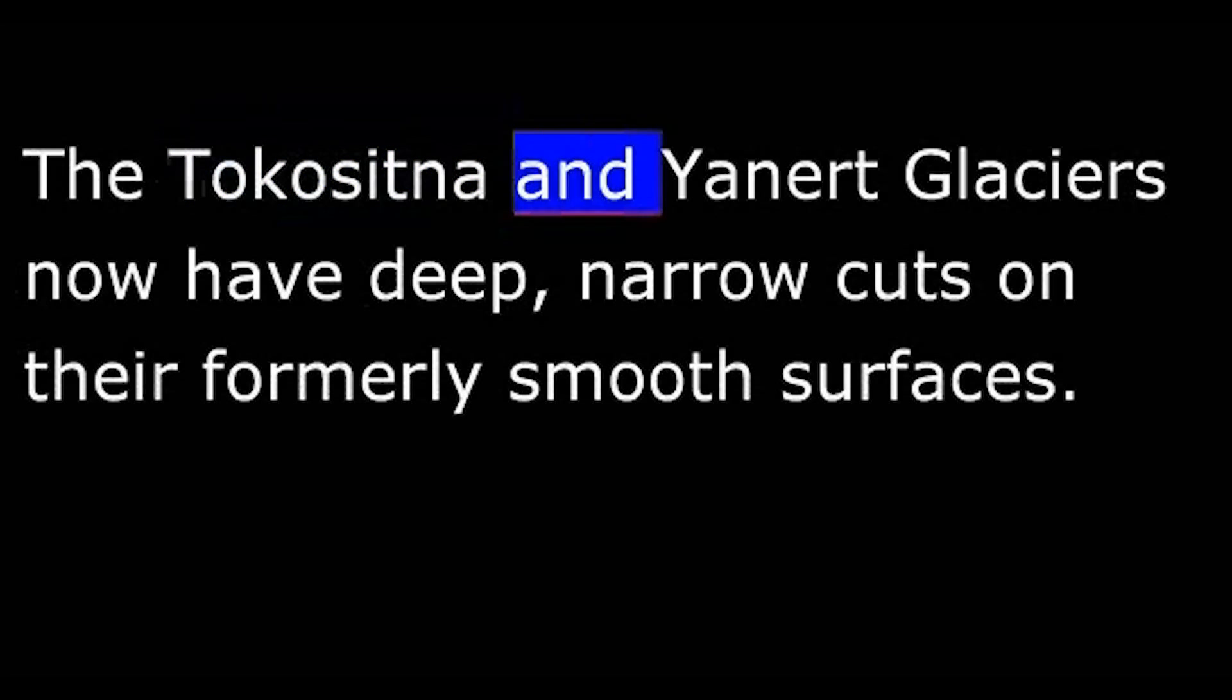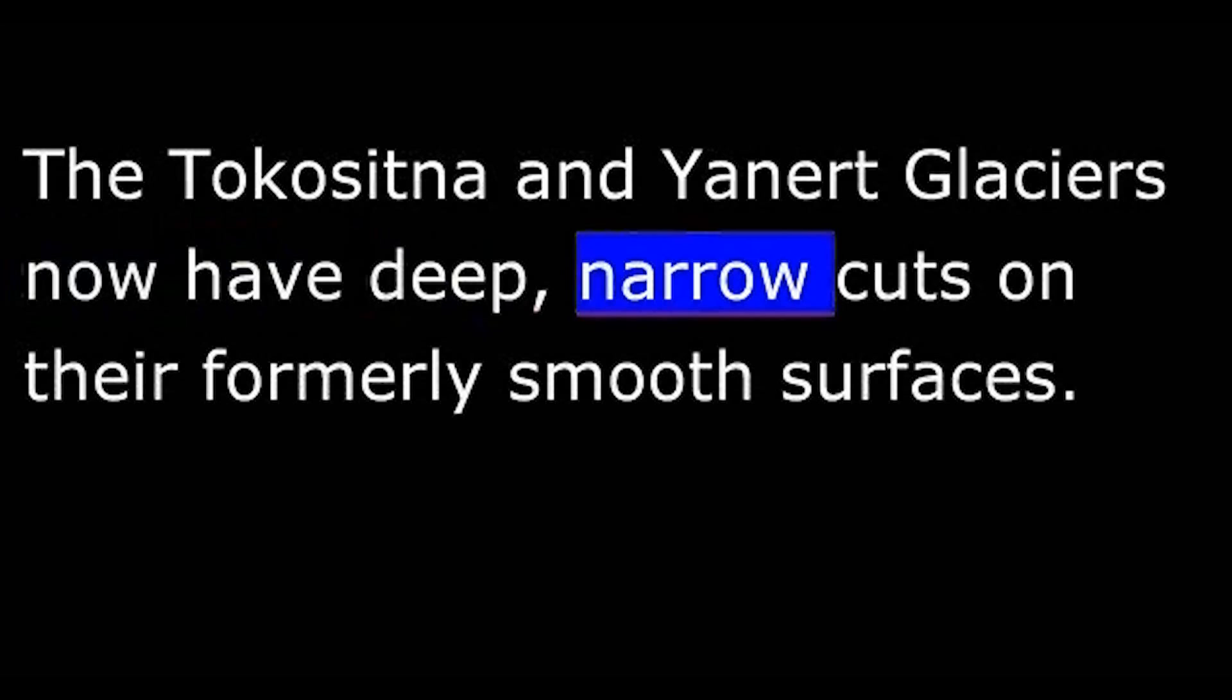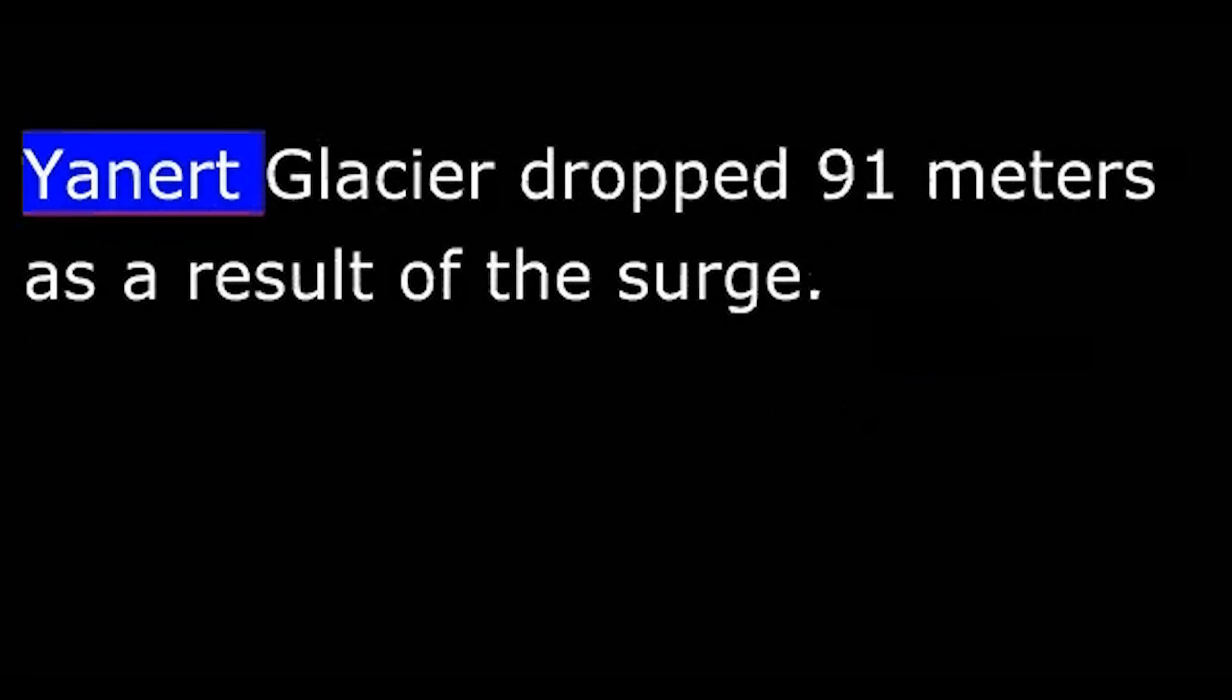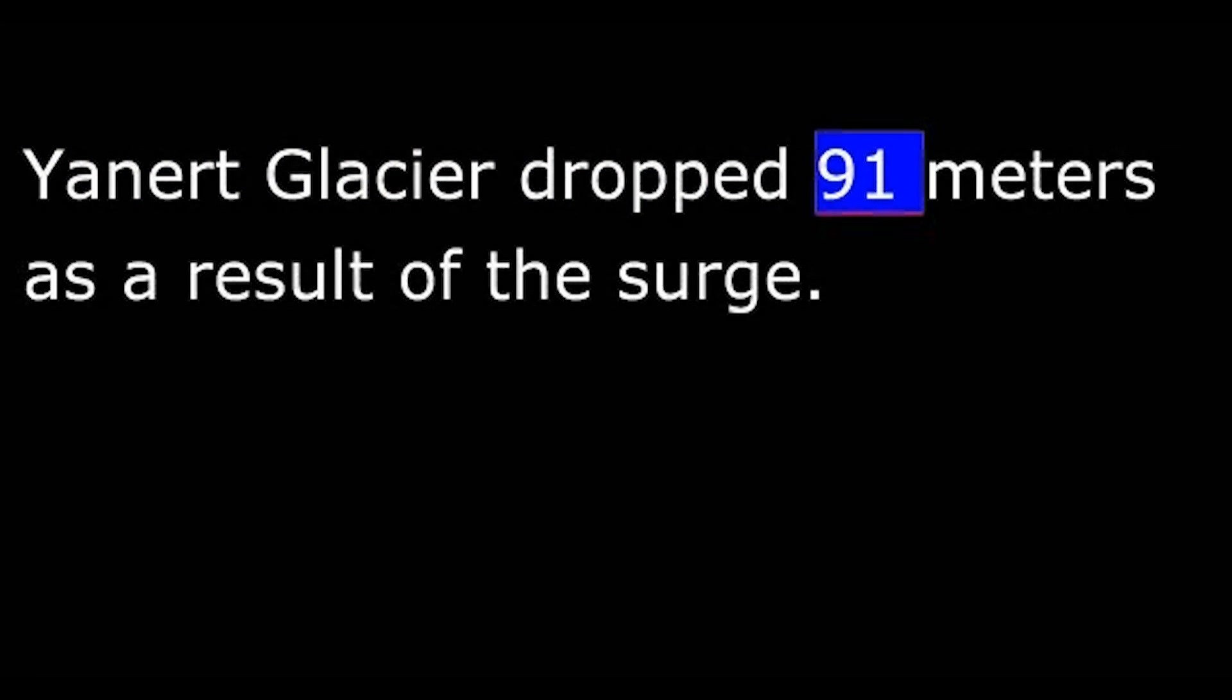The Tokositna and Yanert glaciers now have deep, narrow cuts on their formerly smooth surfaces. Yanert glacier dropped 91 meters as a result of the surge.